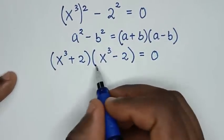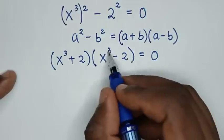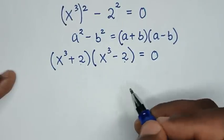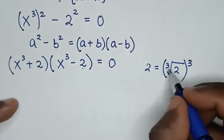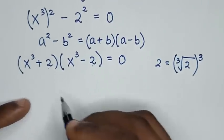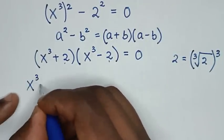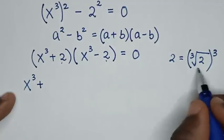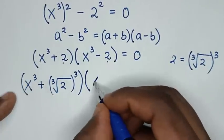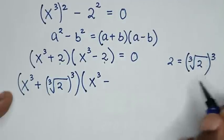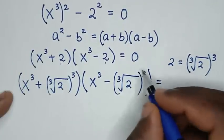Then, in the next step, from both parts we will make them in the form of a perfect cube, because here there is a power of 3. We rewrite 2 as the cube root of 2, raised to the power of 3, because the cube root cancels with the power of 3 to give 2. So we substitute this into both factors, giving (x³ + (∛2)³) times (x³ − (∛2)³) is equal to 0.